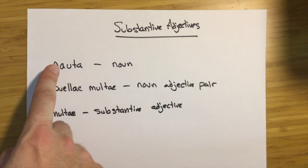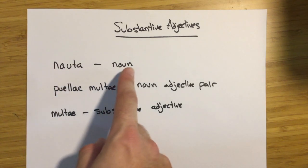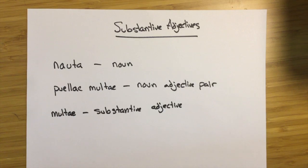Here we have an example of a noun, nauta, which means sailor. If we wanted to use this as the subject of a sentence, we could say the sailor sails or the sailor speaks to the population—typical Latin sentences.